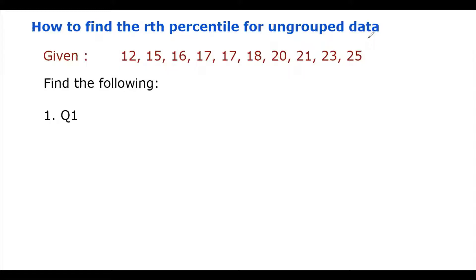We're going to compute the percentile for ungrouped data. We're given a set of 10 observations and asked to find the first quartile. The first quartile is equal to the 25th percentile. The formula for the rth percentile is: P sub r equals r times (n plus 1) over 100.